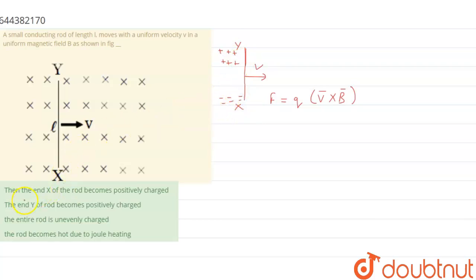Therefore at the end of x axis rod becomes positively charged - no, the end of y rod becomes positively charged, yes. Option B is the right choice.